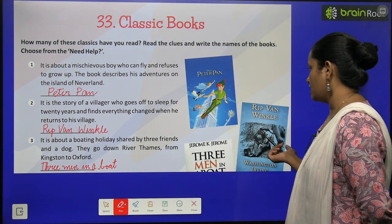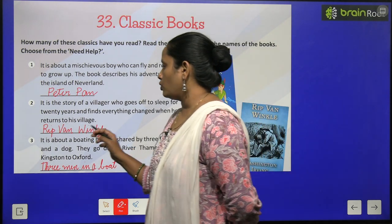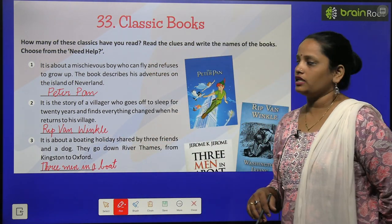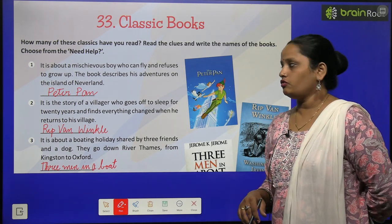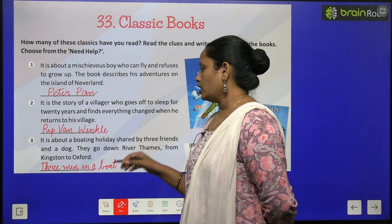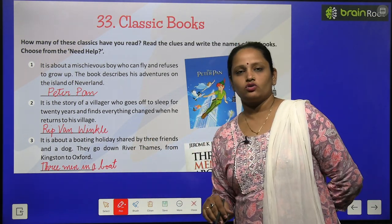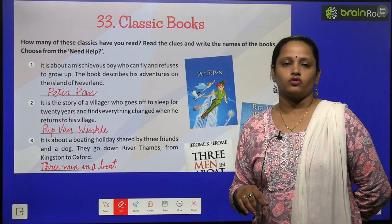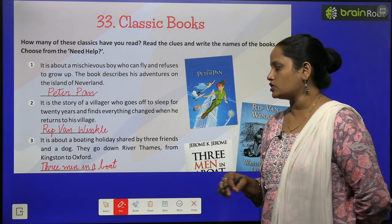Next, it is about a boating holiday shared by three friends and a dog. They travel down the River Thames, going from Kingston to Oxford.